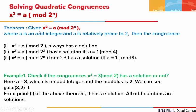Before we begin, let us look at a theorem. Given a quadratic congruence x squared is congruent to a mod of 2 to the power n, where a is an odd integer and a is relatively prime to 2, then the congruence x squared is congruent to a mod of 2 is always solvable. The congruence x squared is congruent to a mod of 2 squared will have a solution if and only if the residue is congruent to 1 mod of 4, and the congruence x squared is congruent to a mod of 2 to the power n, where n is greater than or equal to 3, has a solution if and only if the residue is congruent to 1 mod of 8.